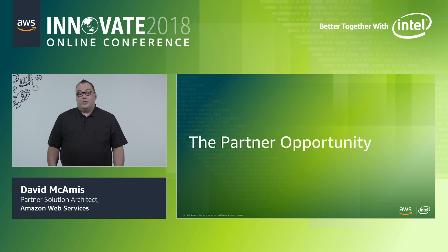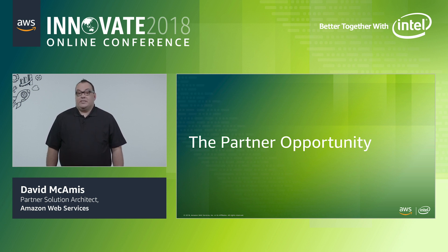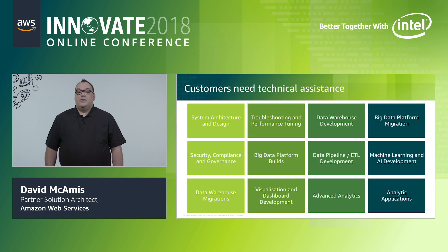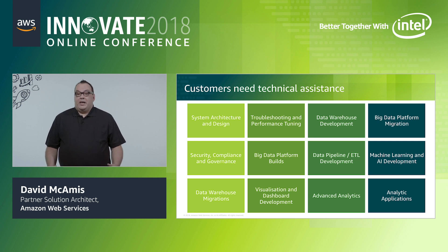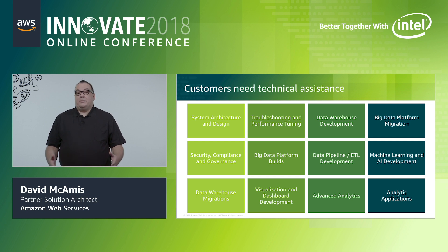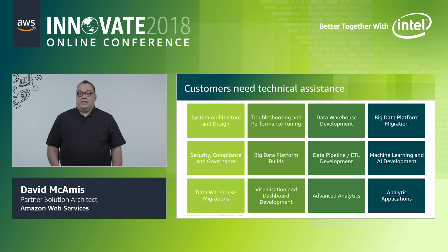The amazing thing about all of these new data architectures is that there is a tremendous opportunity for AWS partners to help our customers build these solutions. For partners, there are three main areas where AWS customers are seeking help. First, customers need technical assistance for system architecture and design. They also may need assistance to develop security, compliance, and governance controls. They may need you to help them with data warehouse migrations and development, as well as creating data pipelines, ETL jobs, and getting data into the platform. You also may need to help customers build big data platforms, do machine learning and AI development.